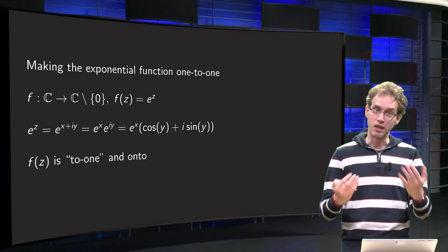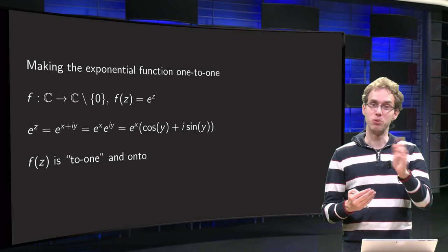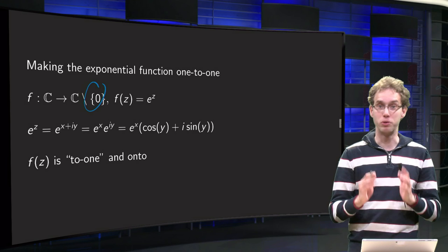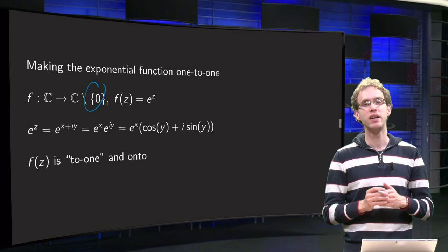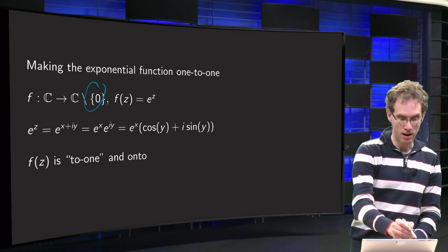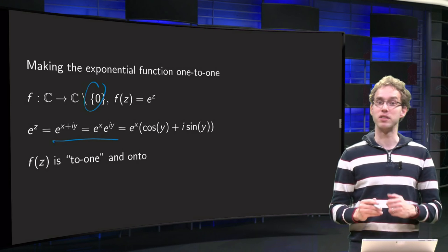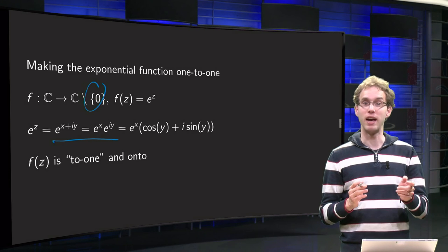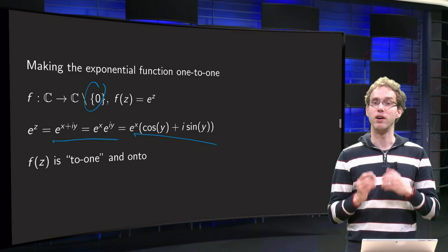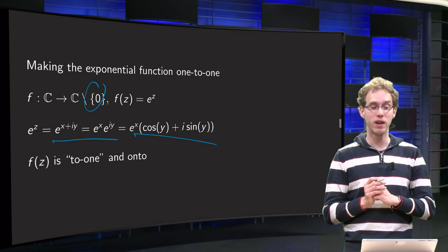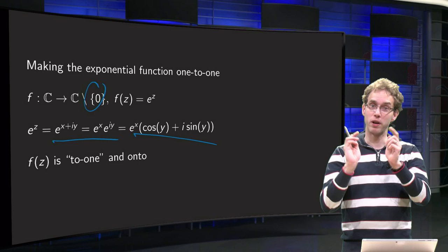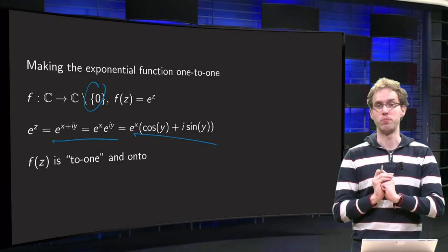Take our function f from ℂ to ℂ excluding the origin, so the onto part is fine. We have f(z) = e^z, where we define e^z as e^x times e^(iy), applying Euler's formula. So we know f(z) is 2-to-1 and onto.